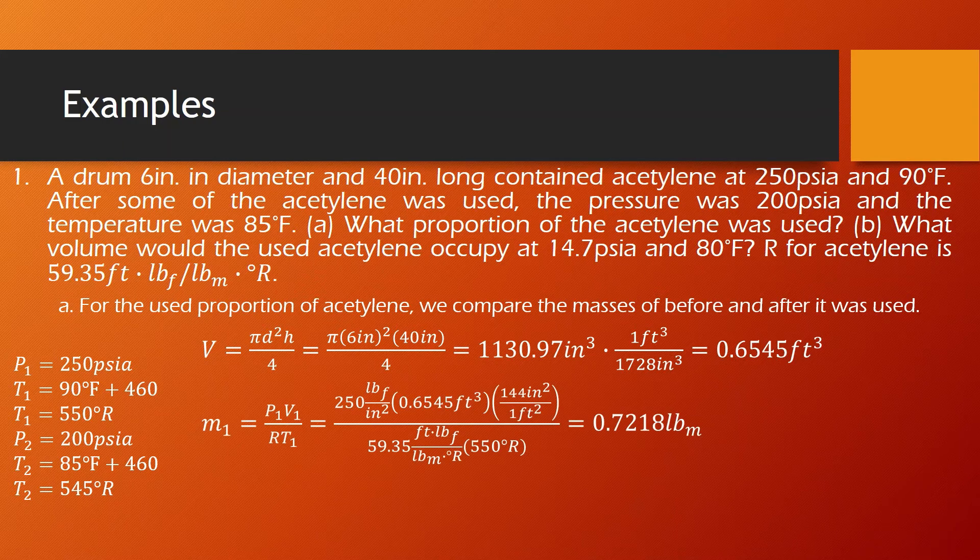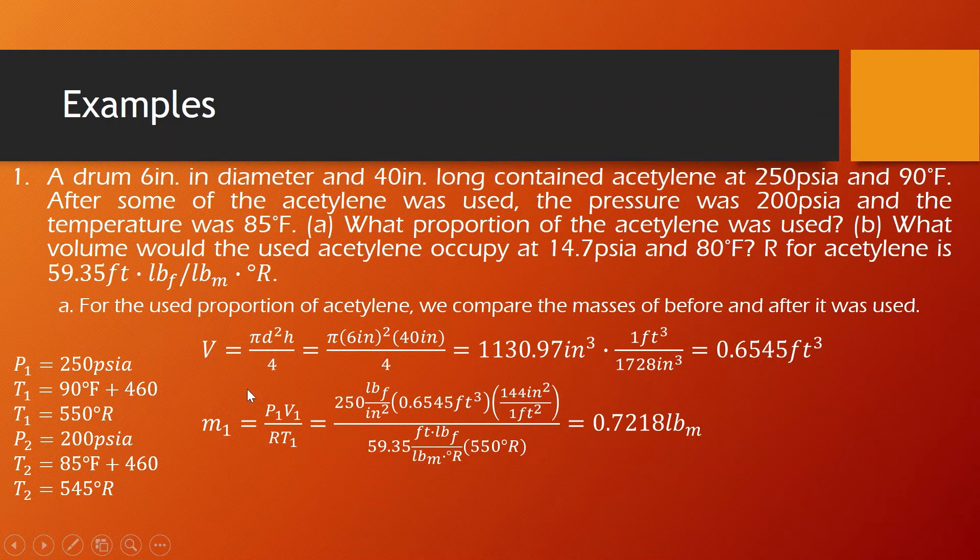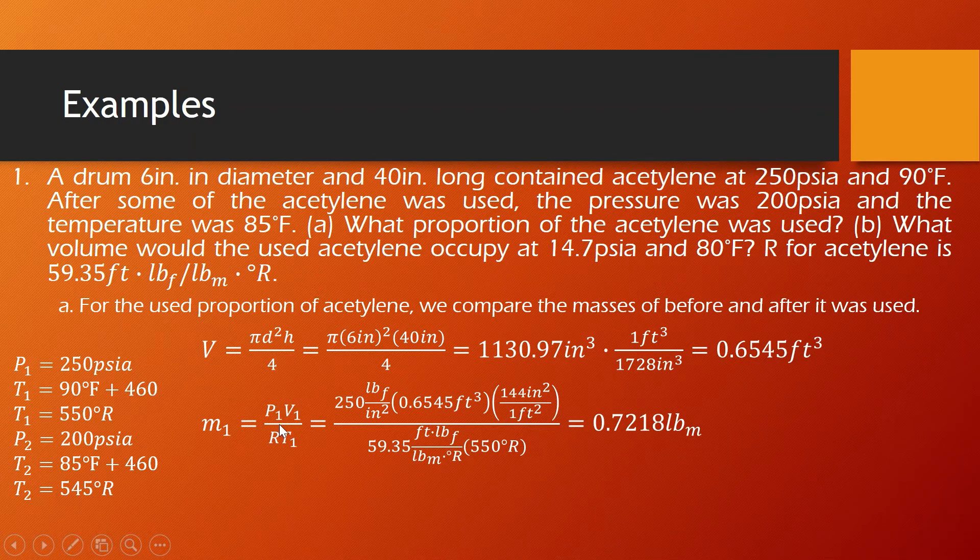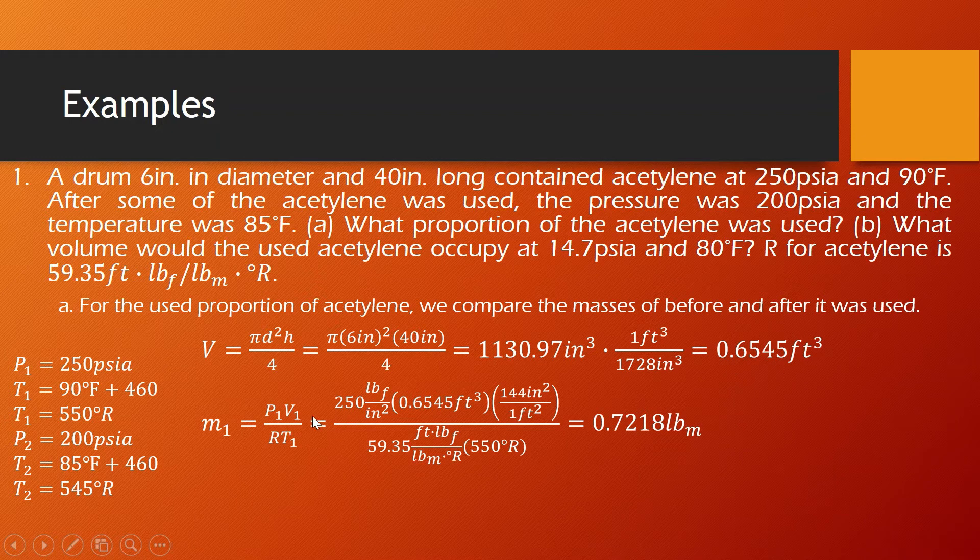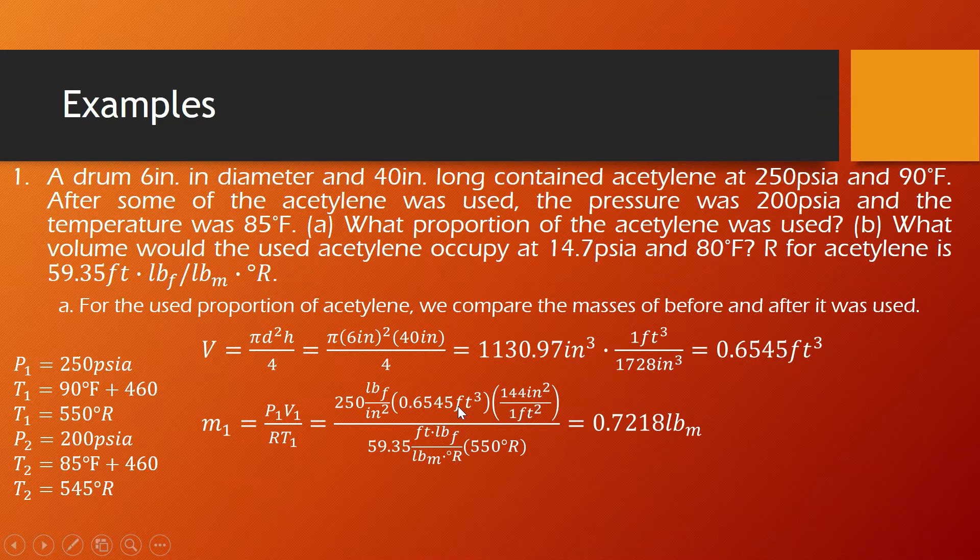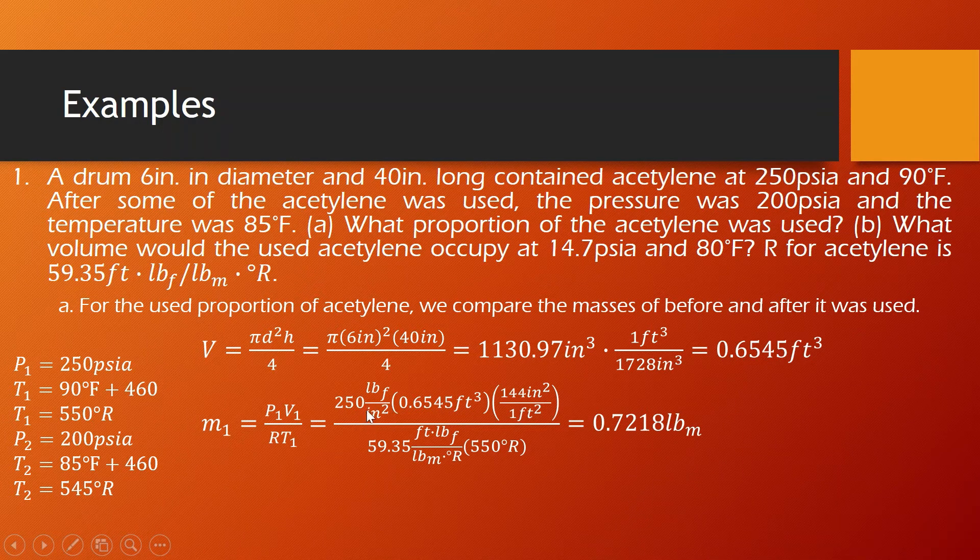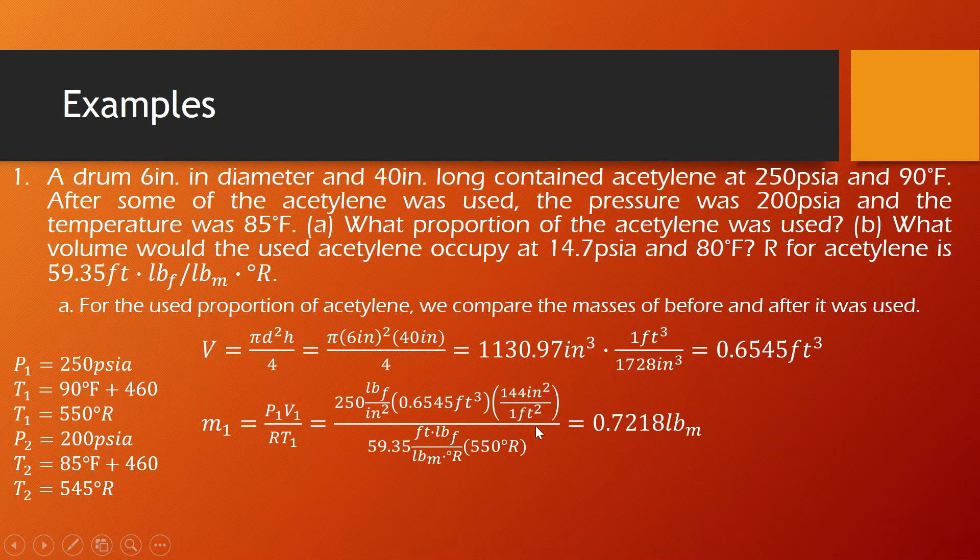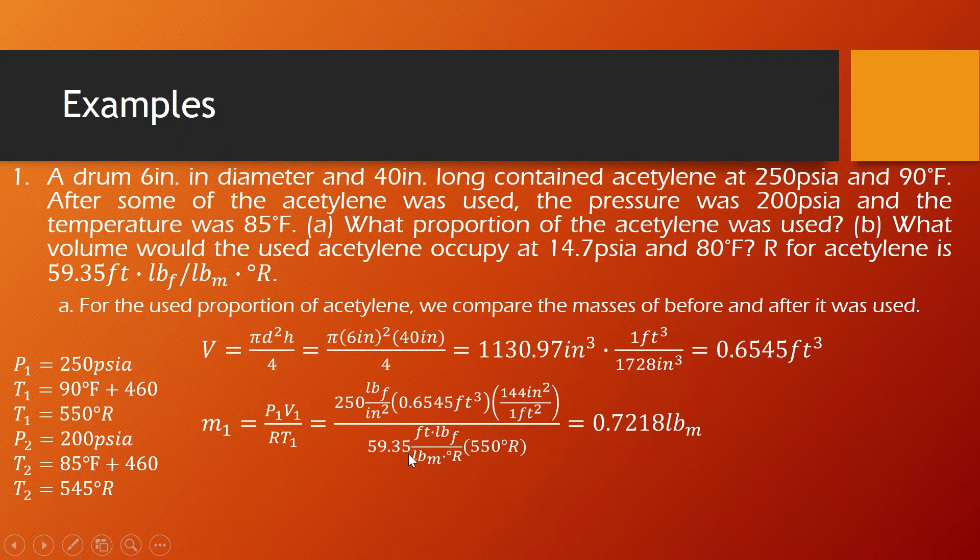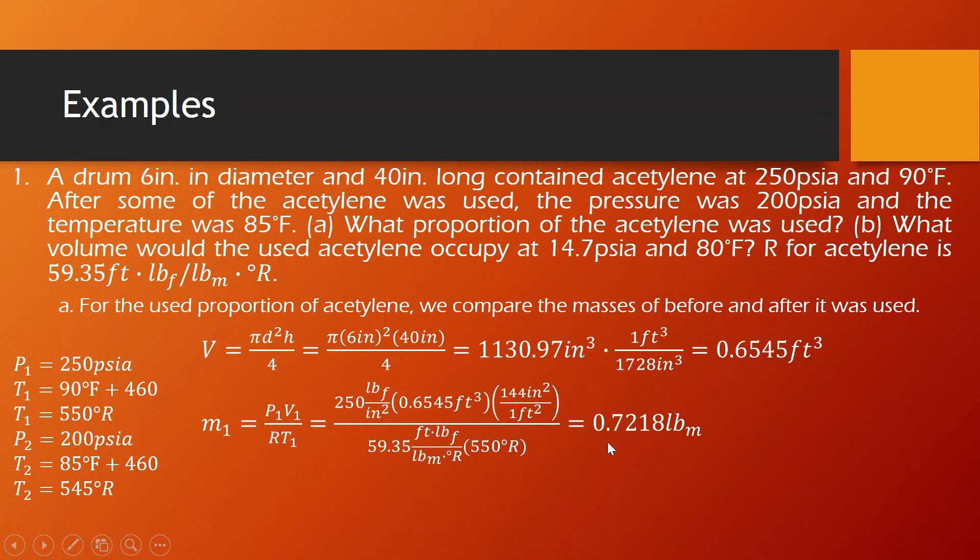For the first mass, we are going to use the ideal gas equation, but we are going to solve for mass 1. So that is P1V1 over R times T1. Our pressure is 250, our volume is 0.6545. And then converting our inches squared here on our pressure into square feet, then R for acetylene is 59.35, and then our temperature is in degree Rankine. So our mass 1 is 0.7218 pound mass.